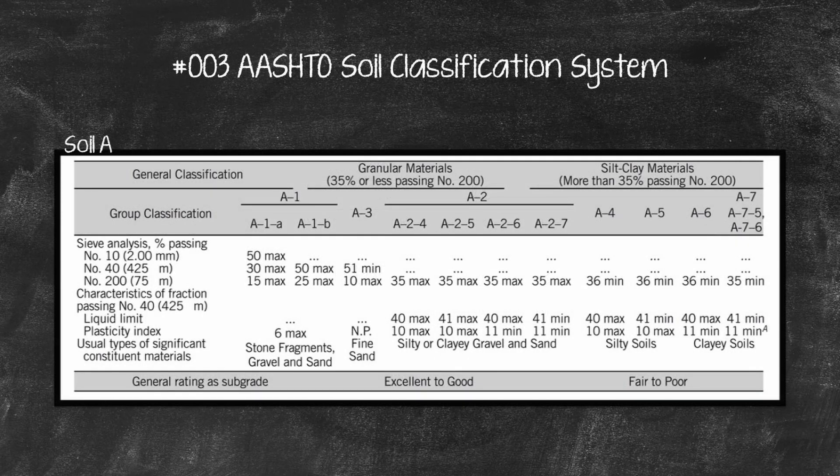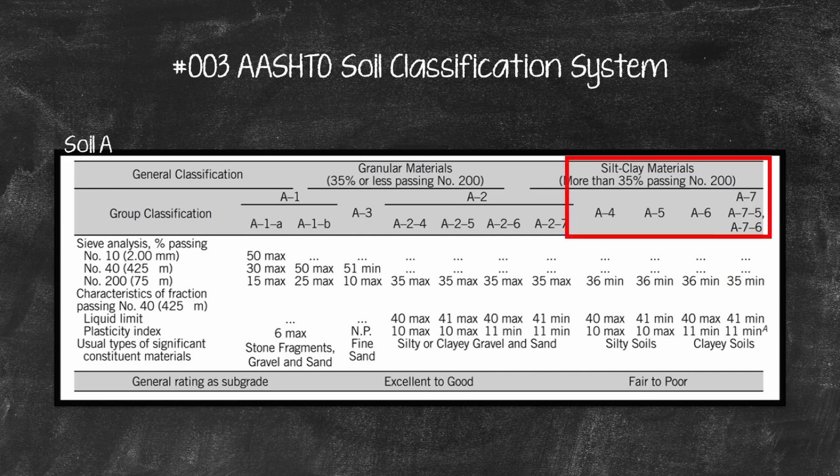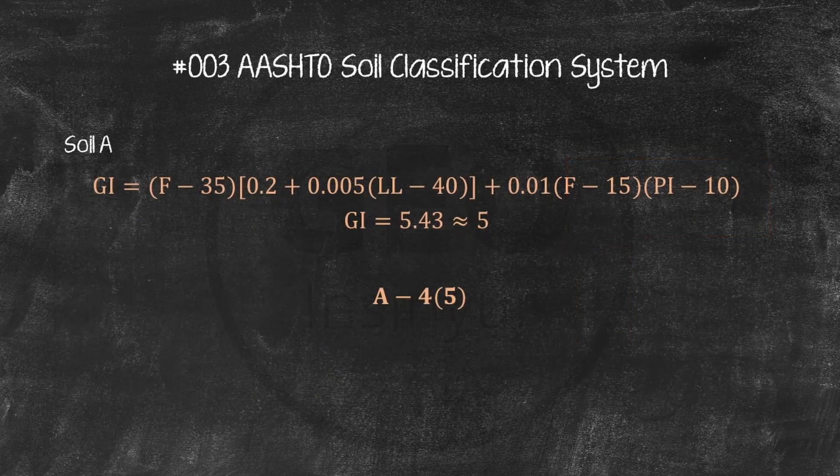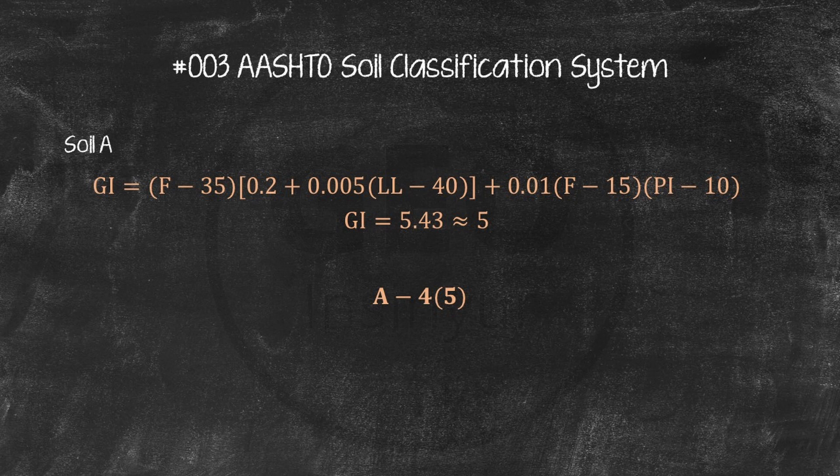Soil A. 88% passing number 200. Therefore soil A is silty clay. Based on the Ashto table, Soil A is A4. The group index is 5.43, reported as 5. So, the classification for soil A is A4, 5.